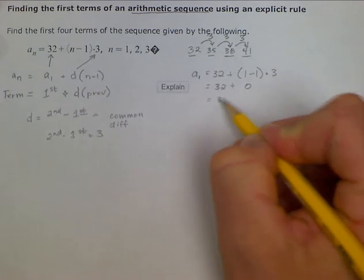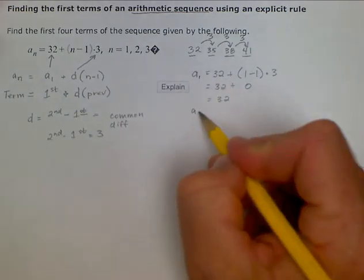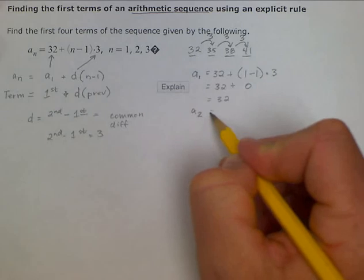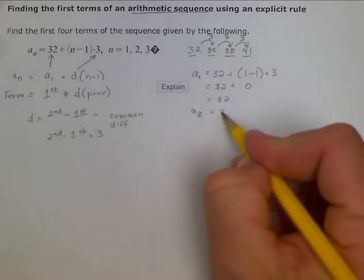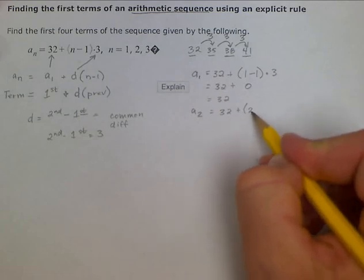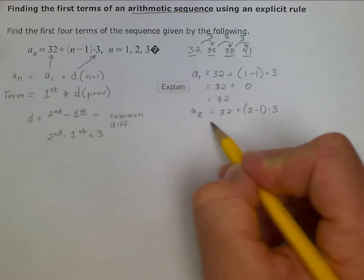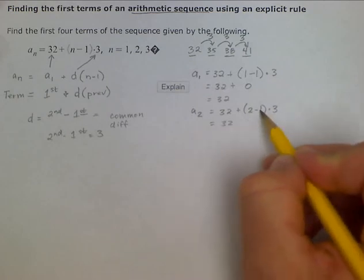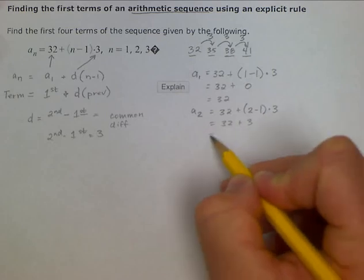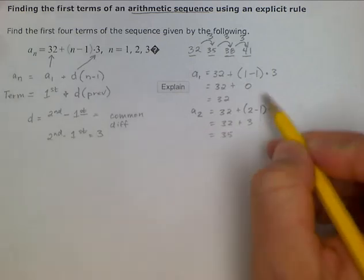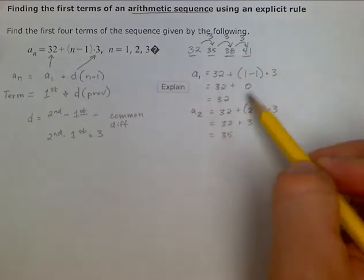And if you wanted to go about it algebraically, you could plug in 2 and do the same thing for each of the terms to confirm that this is the correct answer. 32 plus, when you plug in 2 for n, 2 minus 1 times 3 equals 32. 2 minus 1 is 1, 1 times 3 is 3, and it's equal to 35. And you could go on and do that for n equals 3, and n equals 4, and you would get the same thing.